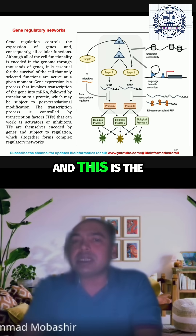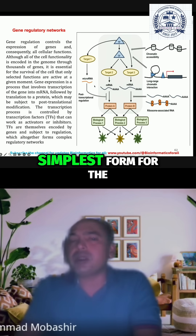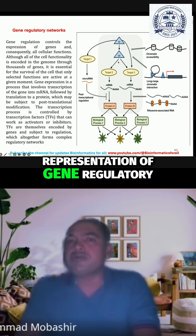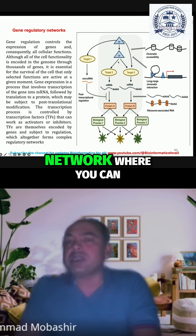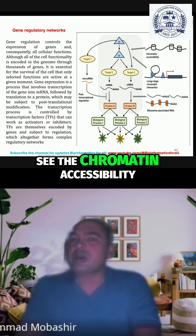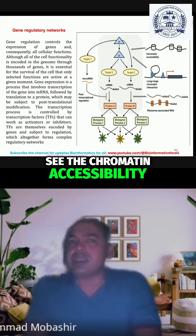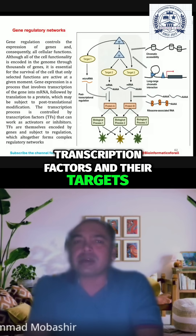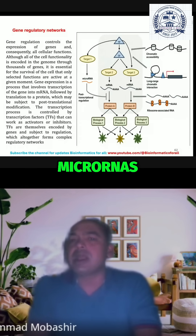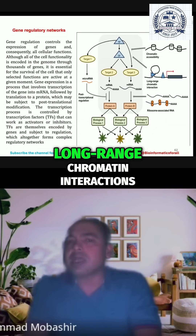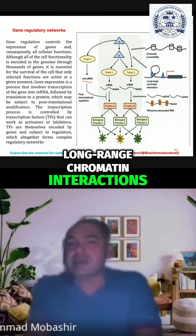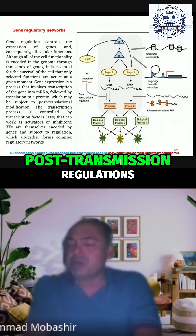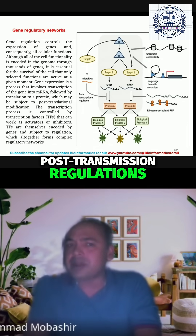And this is the simplest form for the representation of a gene regulatory network, where you can see the chromatin accessibility, transcription factors and their targets, micro-RNAs, long-range chromatin interactions, and then protein-level post-translational regulations.